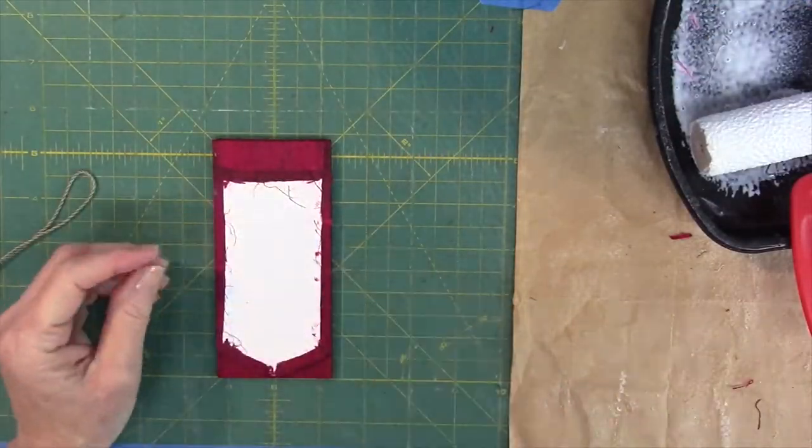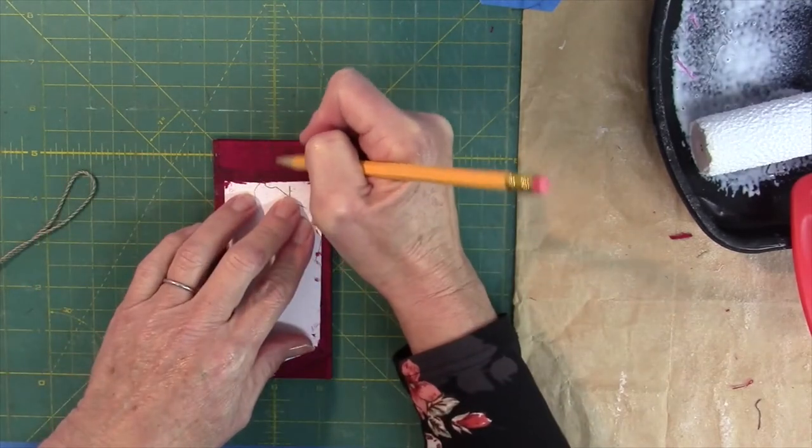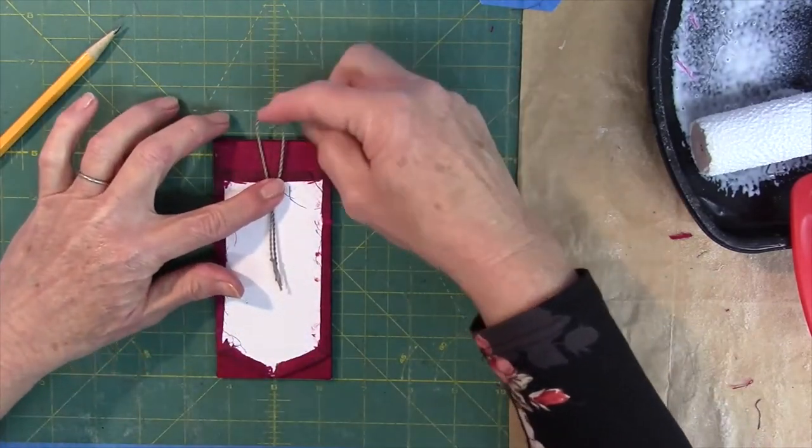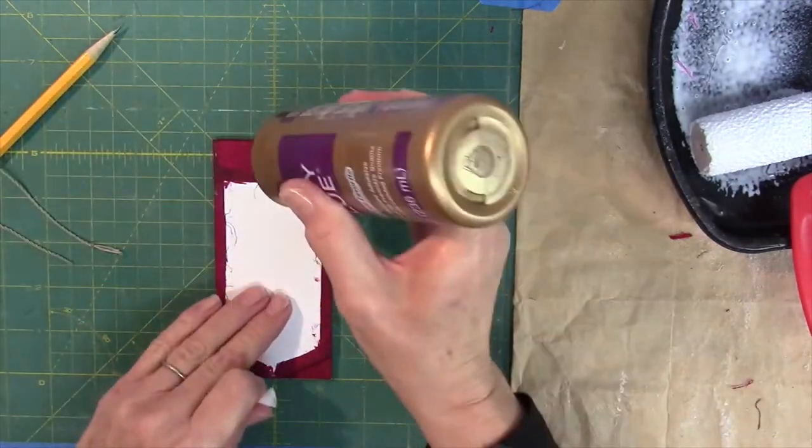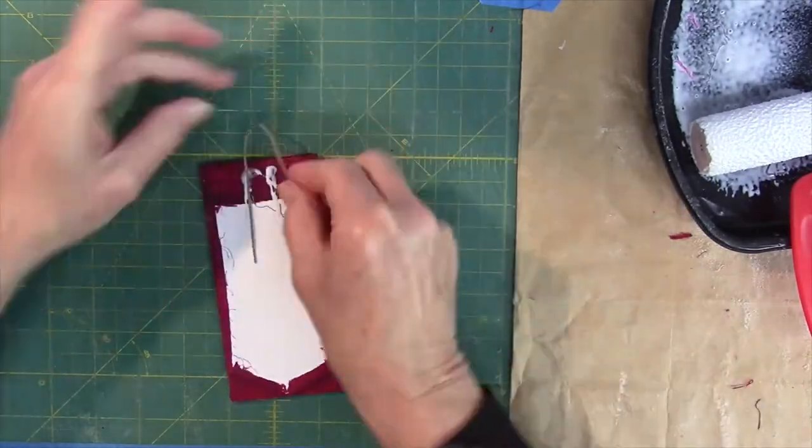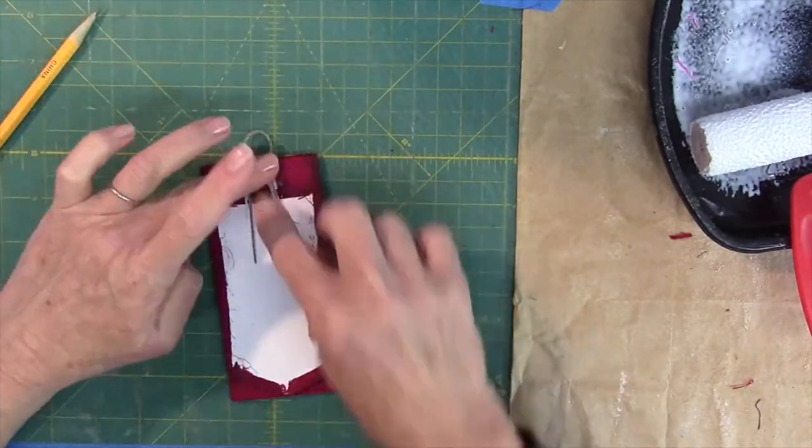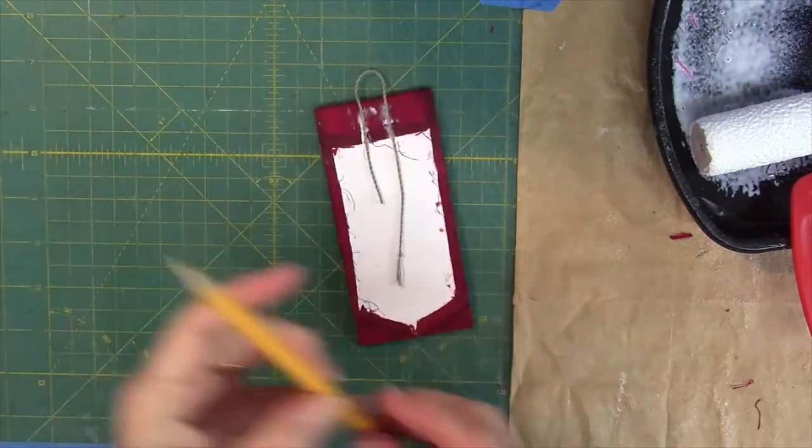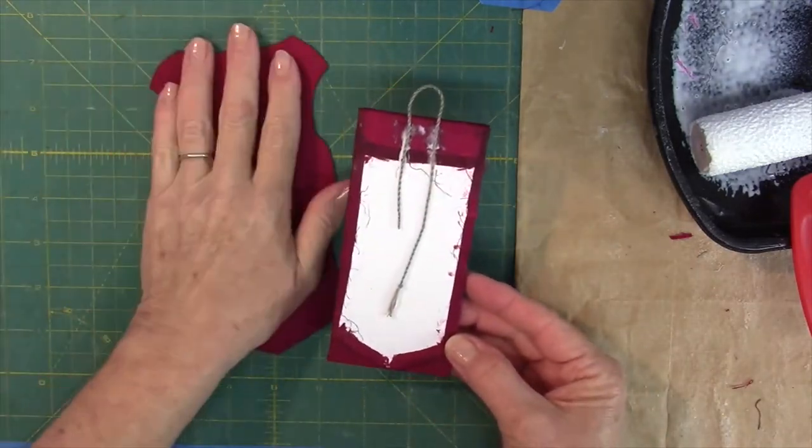Now find the easel center along its top edge. Mark one quarter inch on either side of the center. Place a little bead of glue, then lay the cording on to the glue. Make a three quarter of an inch deep loop to form the hanger. And now let's just let this hanger set up a bit. Later, the easel is ready to be glued to the banner back.